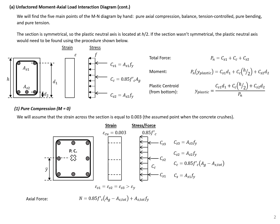We'll start by finding our unfactored moment-axial load interaction diagram, finding five main points on this diagram by hand: pure axial compression, the balance point, the tension-controlled point, the pure bending point, and pure tension.